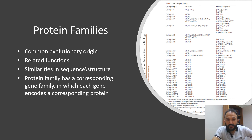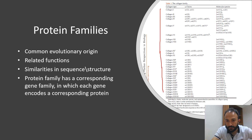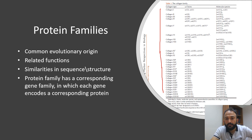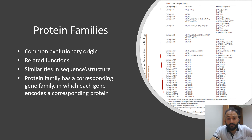The example shown is of the collagen family. There are so many collagen genes or proteins present in a cell, and all of them are collagens. They have structure and sequence similarity and are related to each other, but they do not have identical functions — they have related functions. That is the definition of a protein family.